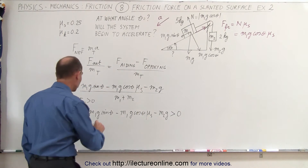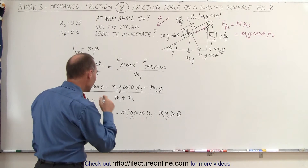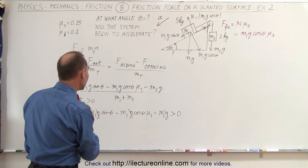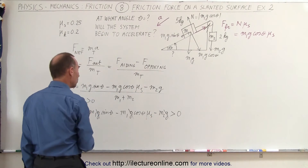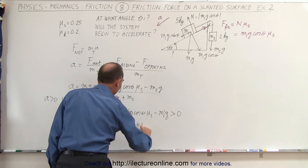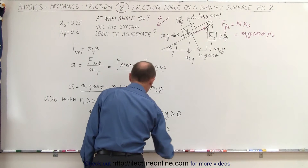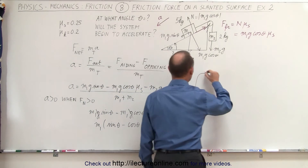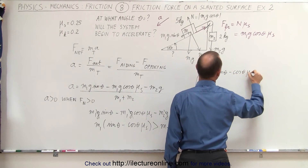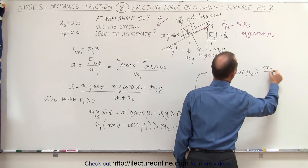Right away we can cancel all the g's. The only unknown variable is theta, which is what we're solving for. We move M2 to the other side and factor out M1 from the left side, giving us M1 times (sine theta minus cosine theta times mu sub s) greater than M2. Dividing both sides by M1, we get: sine of theta minus cosine of theta times mu sub s must be greater than M2 over M1.